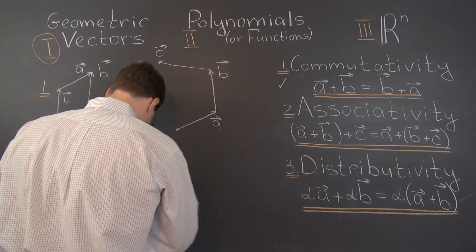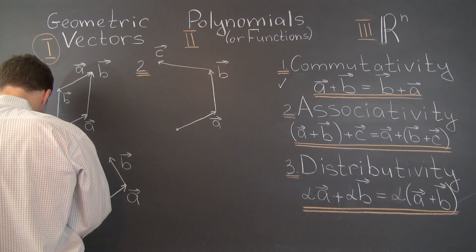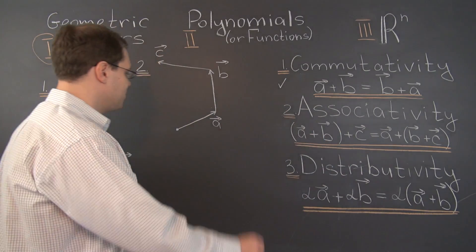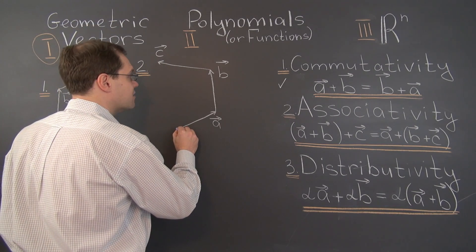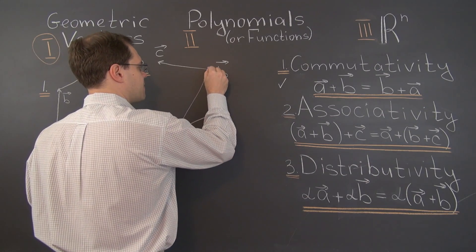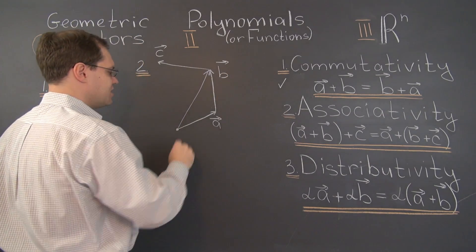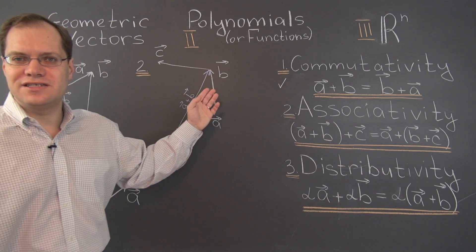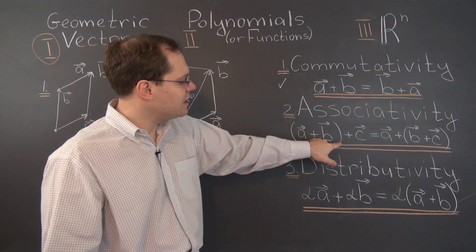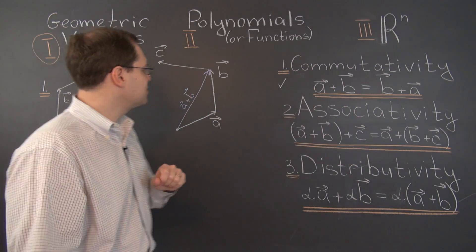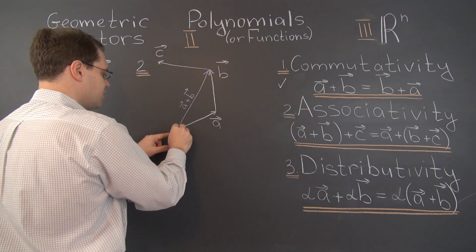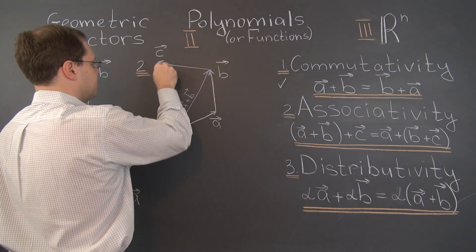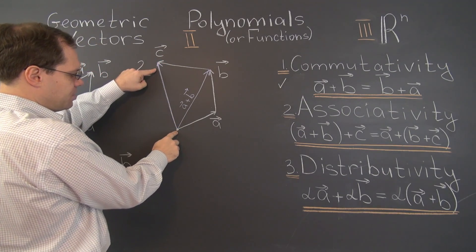Let's take a look — I think using a new color would help. Let's go with purple. What is A plus B? A plus B is this vector right here, according to our rule of addition. So that's A plus B. And now to A plus B we have to add C, according to the same rule. So A plus B plus C goes from the origin to the tip of vector C. This is A plus B plus C.